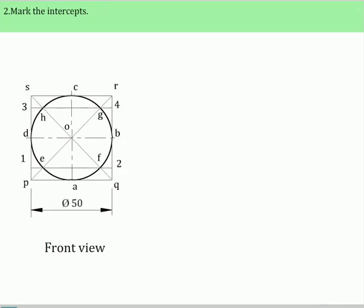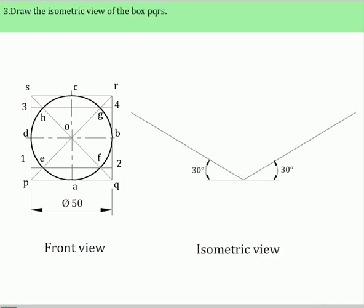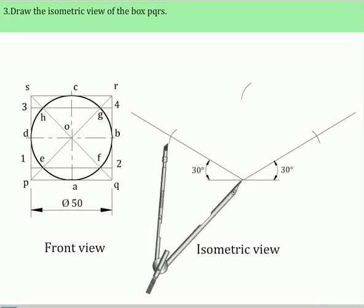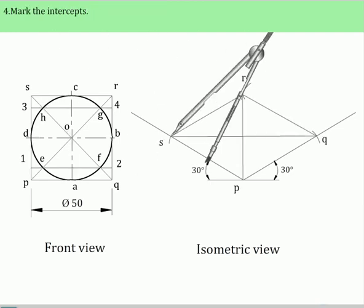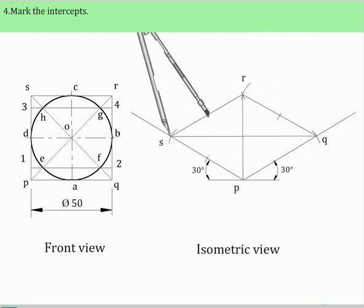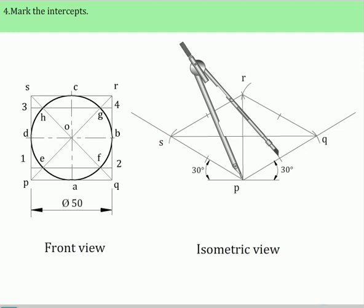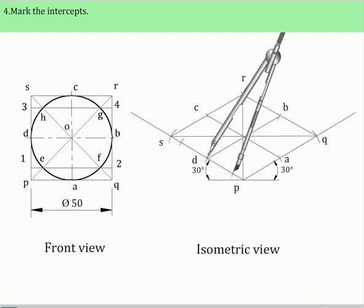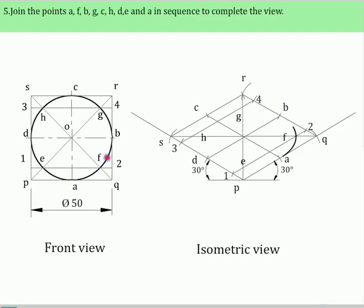Mark the intercepts. Now draw the isometric view of the box PQRS. Mark the intercepts with proper measurements isometrically. Join the points A, F, B, G, C, H, D, E, and A in proper sequence to complete the view.